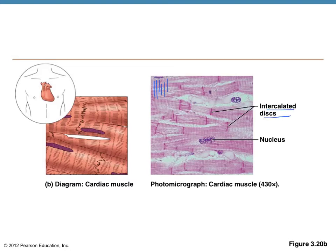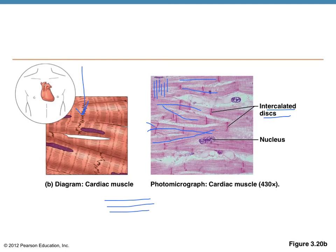You can see the intercalated discs, which really help conduct an electrical signal across the heart when it contracts. You can see how these cells aren't long and cylindrical like skeletal muscle — they actually branch into multiple branches, kind of like the way you would interlace your fingers between one another. It is striated, but the difference between skeletal and cardiac muscle is whether they are long parallel bands or whether they look like they branch.